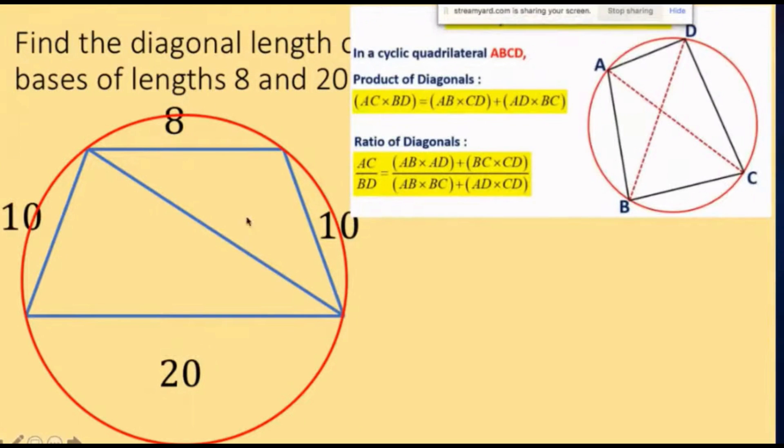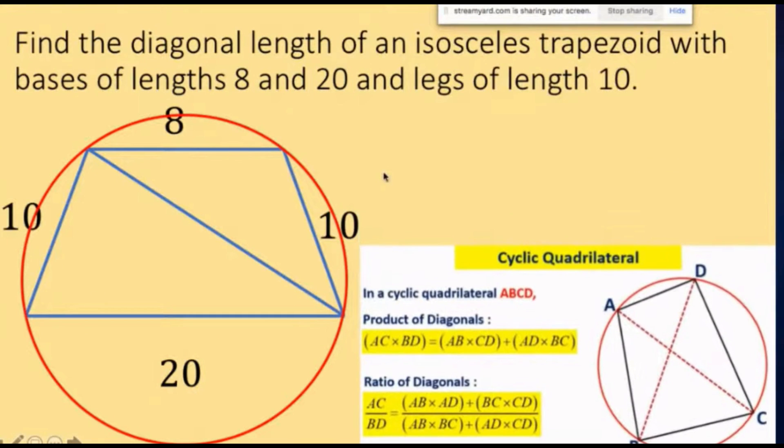When you have this cyclic quadrilateral, meaning a quadrilateral that can be inscribed in a circle, we can use what we call Ptolemy's theorem. The product of the diagonals...